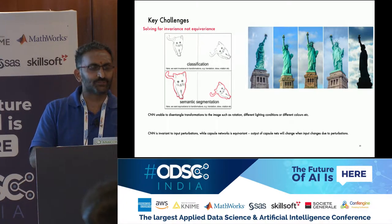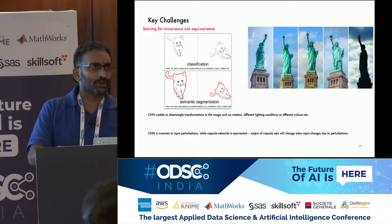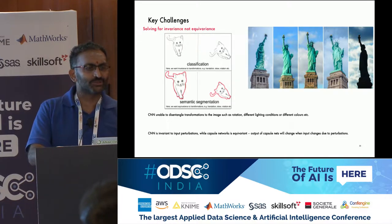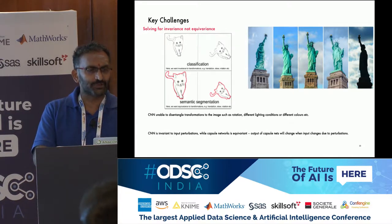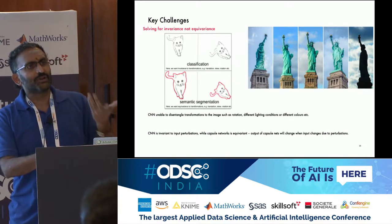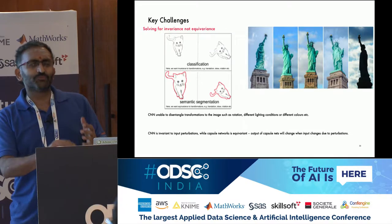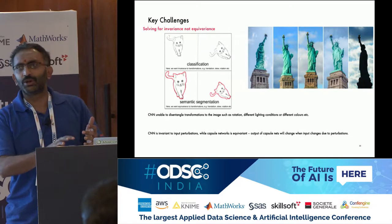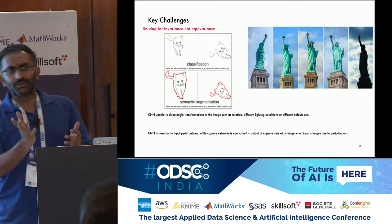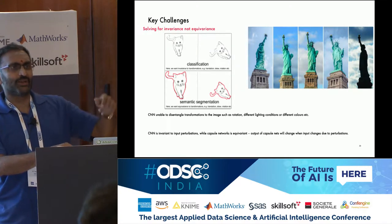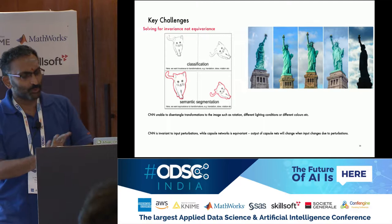For simpler classification tasks you are fine with invariance — convolutional networks that are invariant, meaning when the input changes the output does not change. But when there are small perturbations it becomes difficult to handle those. You should instead strive for equivariance, where if the input changes slightly, the output changes and you are able to model the change in input. This is the essential difference between CNNs and other deep learning networks versus capsules: deep learning is typically invariant, but capsules are equivariant. CNNs are very sensitive to image perturbations — rotate the image slightly, add noise, and performance degrades.